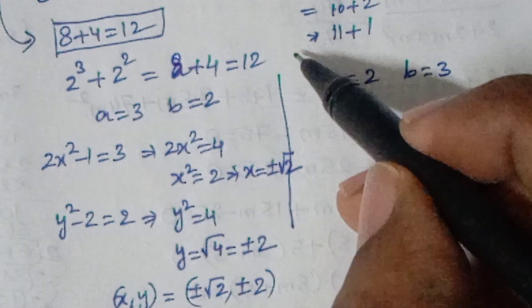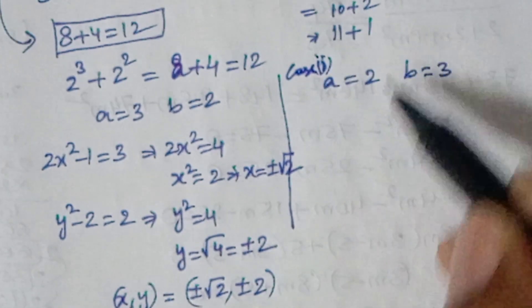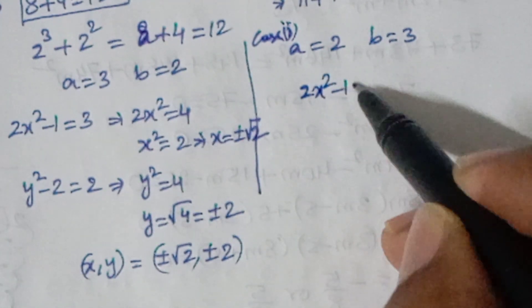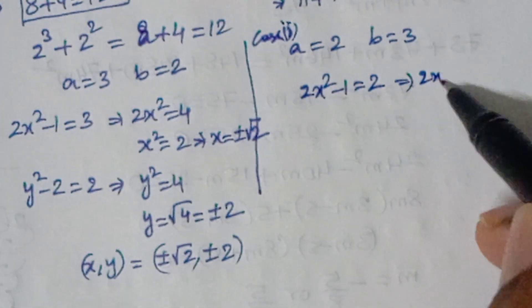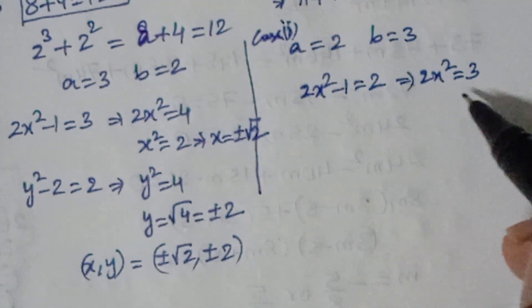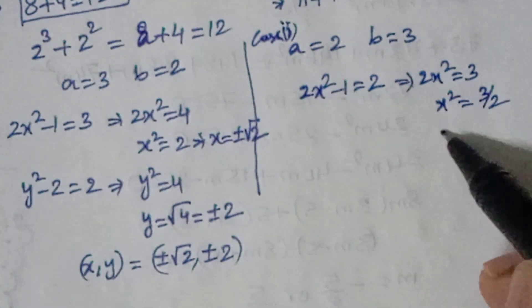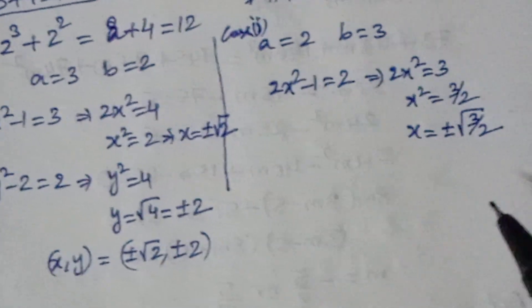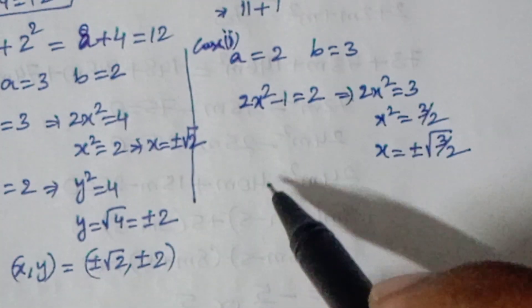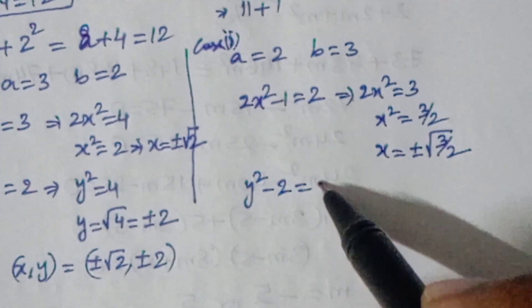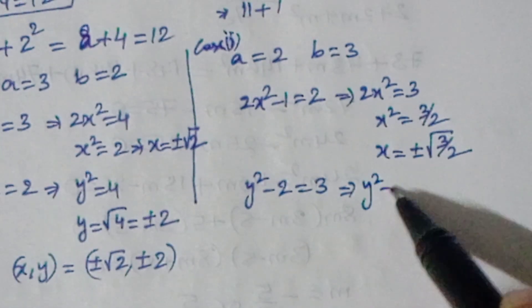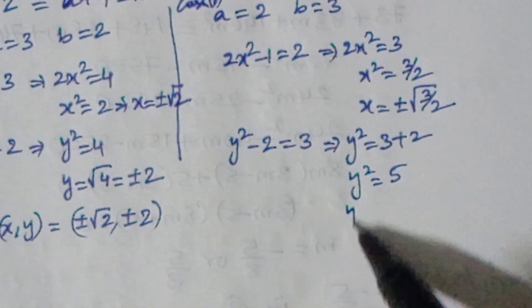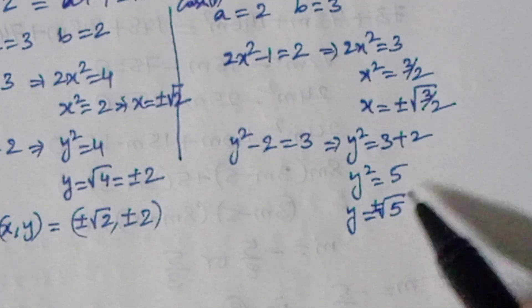In Case 2, a = 2 and b = 3. So 2x² - 1 = 2, giving 2x² = 3, x² = 3/2, and x = ±√(3/2). For b = 3: y² - 2 = 3, so y² = 5, and y = ±√5.